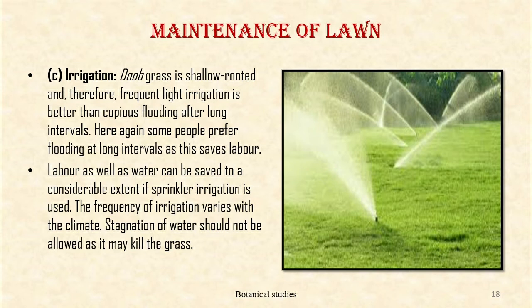Irrigation: Doob grass is shallow rooted and therefore frequent light irrigation is better than copious flooding after long intervals. However, some people prefer flooding at long intervals as this saves labor as well as water. If sprinkler irrigation is used, the frequency of irrigation varies with the climate. Stagnation of water should not be allowed as it may kill the grass.